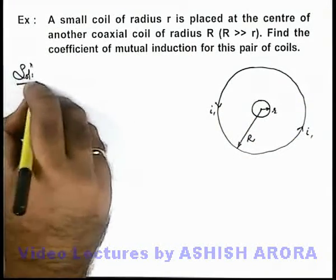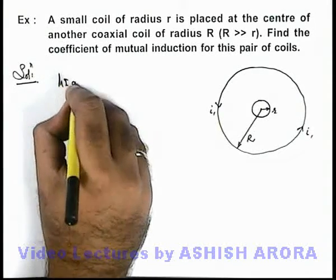So if we supply a current i1 in the outer coil, here we can easily calculate the magnetic induction at center